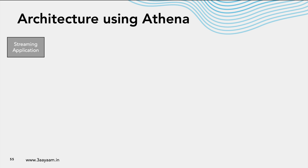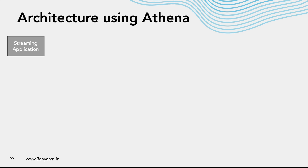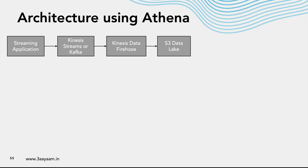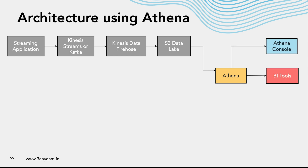Let's say we have a streaming application — you already know what a streaming application is — which streams data from various sources such as IoT devices, CCTV cameras, or sensors. The data is sent to Kinesis Streams or Kafka, and from there it is sent to Kinesis Data Firehose, which eventually sends the data to an S3 data lake. If we have to run some ad hoc analytics on top of it, we can use Athena.